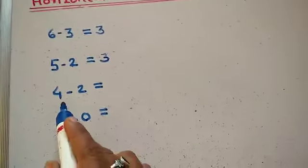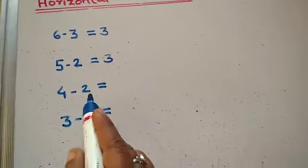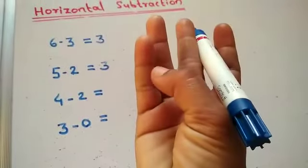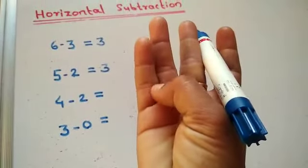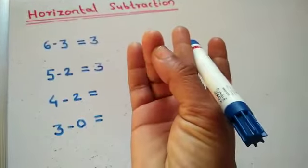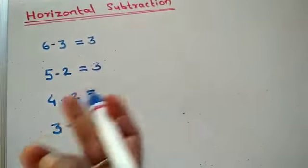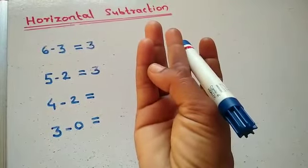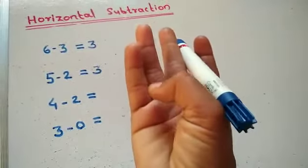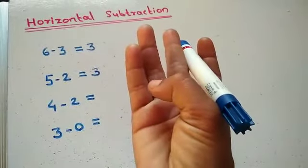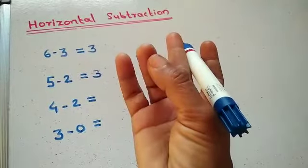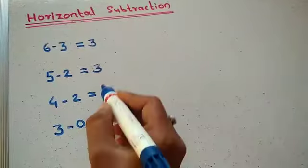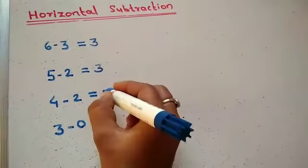Now, 4 minus 2. Count the number 4: 1, 2, 3, 4. Minus 2 — remove 2 sections: 1, 2. How many sections are left? 1, 2 — 2 sections. So 4 minus 2 is equal to 2.